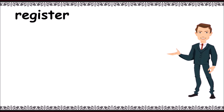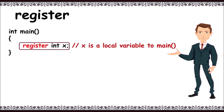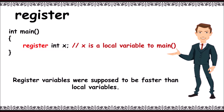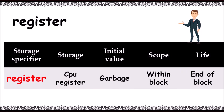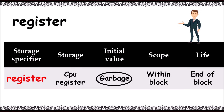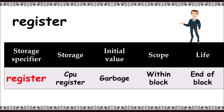Register: register variables were supposed to be faster than local variables. However, modern compilers are doing a better job related to speed. For example, register int x. The keyword is register, storage is on CPU registers, initial value is a garbage value, scope is within the block, and lifetime is till the end of the block.